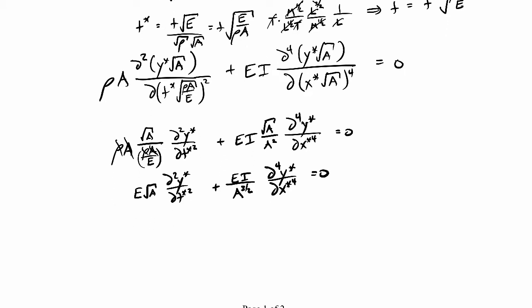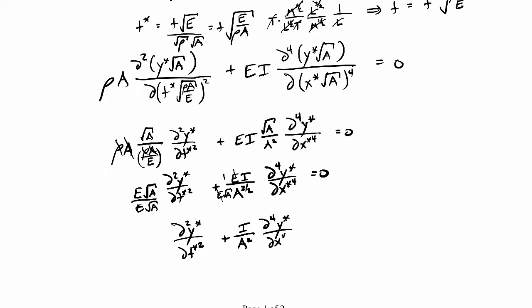Times d⁴ y* over d(x*)⁴ equals zero. Then we'll do one more step: divide the whole equation through by E times the square root of A. So the first term becomes d² y* over d(t*)², and for the second term the E cancels out, leaving I over A² times d⁴ y* over d(x*)⁴ equals zero. That's my final form for the differential equation.